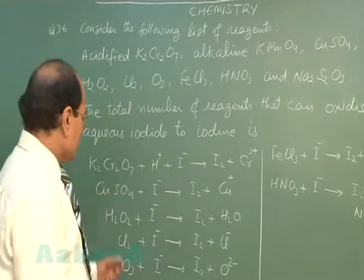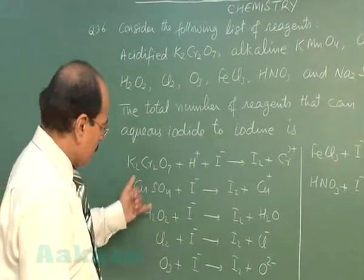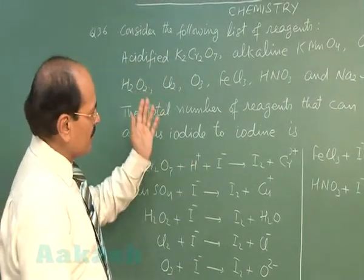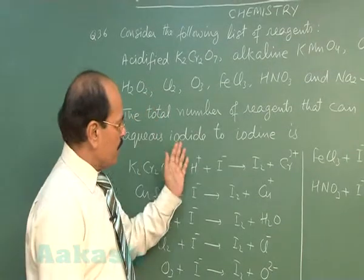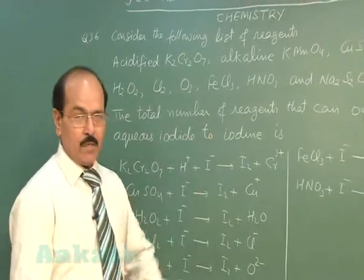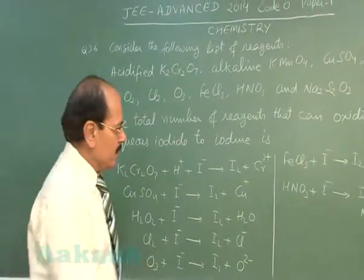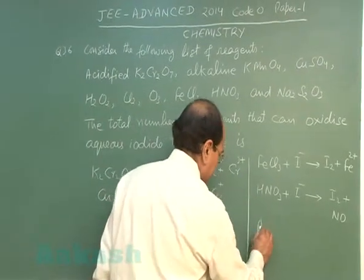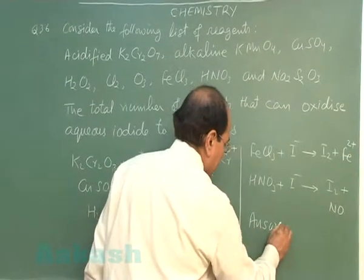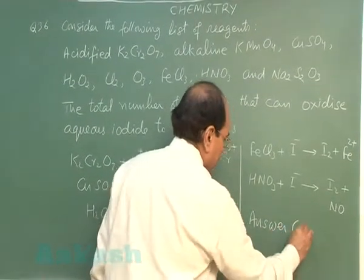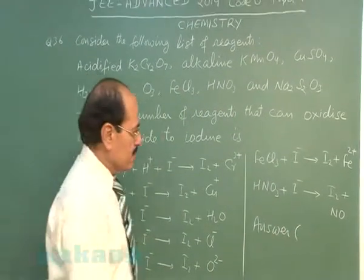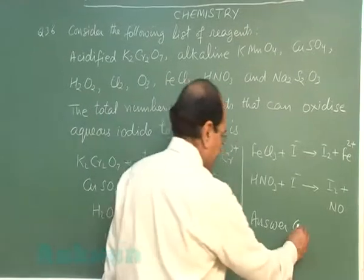So, these are the oxidizing agents which oxidize aqueous iodide to iodine. The correct answer of this question is 7.